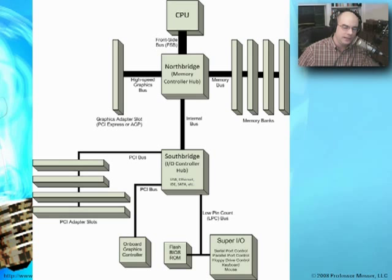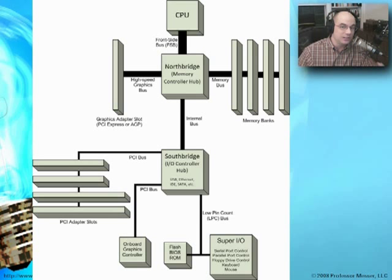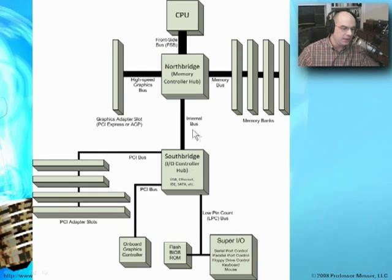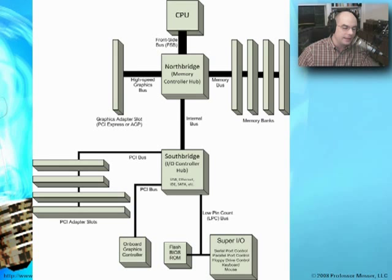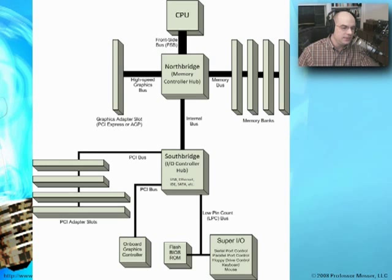The graphics card is often directly connected to the North Bridge on that high-speed bus, because video needs a lot of bandwidth, processing power, and frequent access to the CPU and memory. That's why it makes sense to connect it to the faster northern buses. The North Bridge is then connected to the South Bridge through an internal bus, and the South Bridge has almost everything else — PCI slots, expansion slots, onboard graphics, and a Super IO chip controlling serial ports, parallel ports, and other legacy ports.